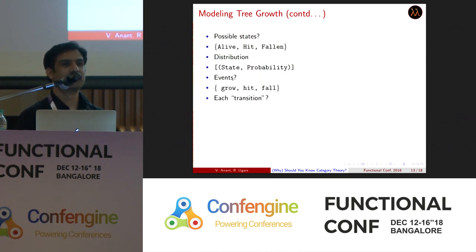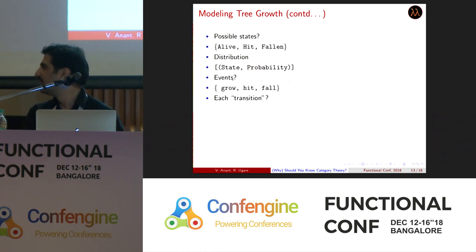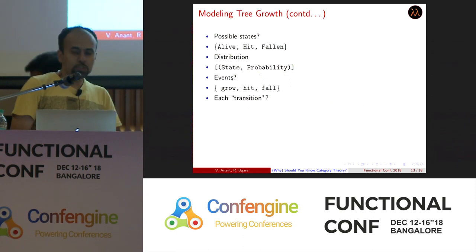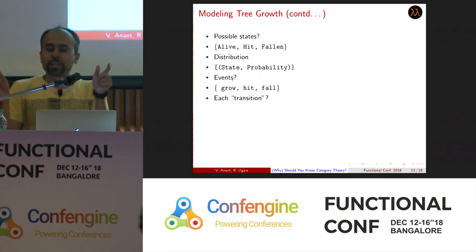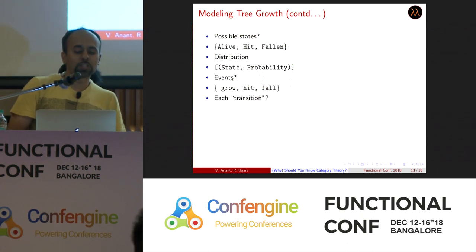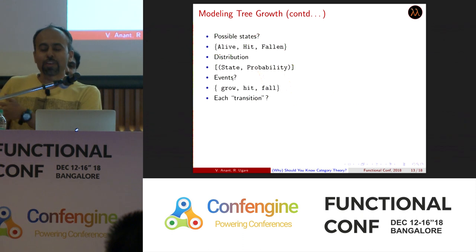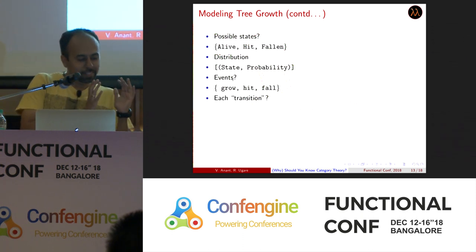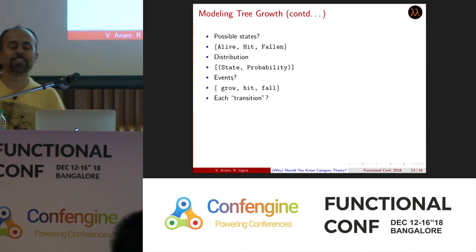There are things that can happen: grow, hit, and fall — these are what we can do year on year. Every year, a state transitions into a probability distribution of states after that year. What we want to achieve is: given a tree in a particular state, what is the distribution of states after that? Like a coin toss — the distribution would be heads 0.5, tails 0.5 for an unbiased coin. But it's a dependent kind of event — once a tree falls it cannot be alive or grow again, so the output of one stage is required as input for the next stage.